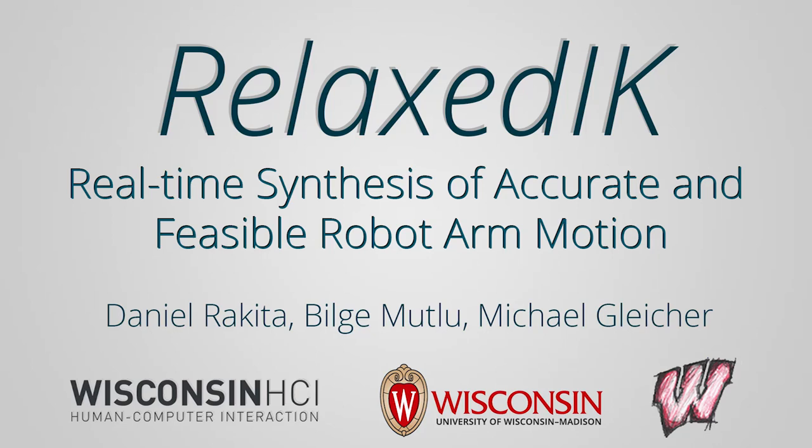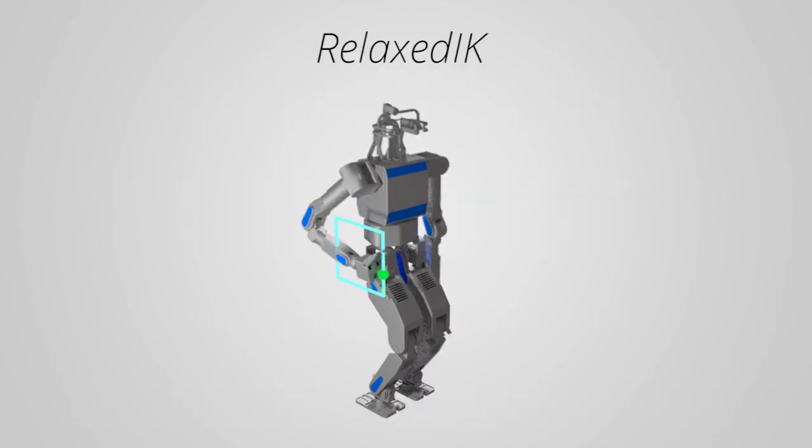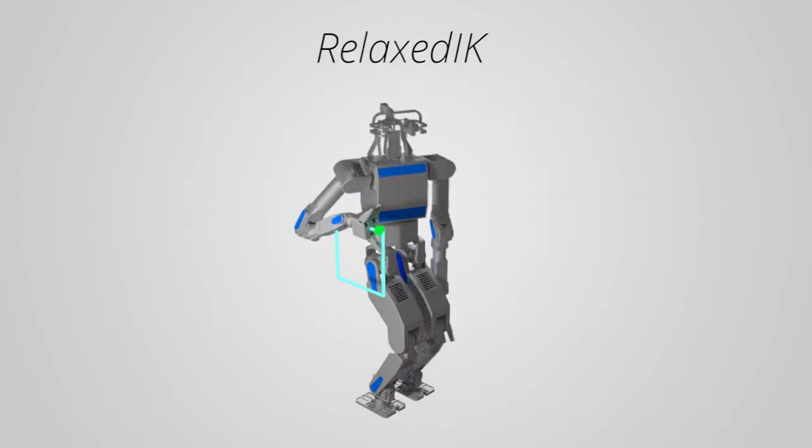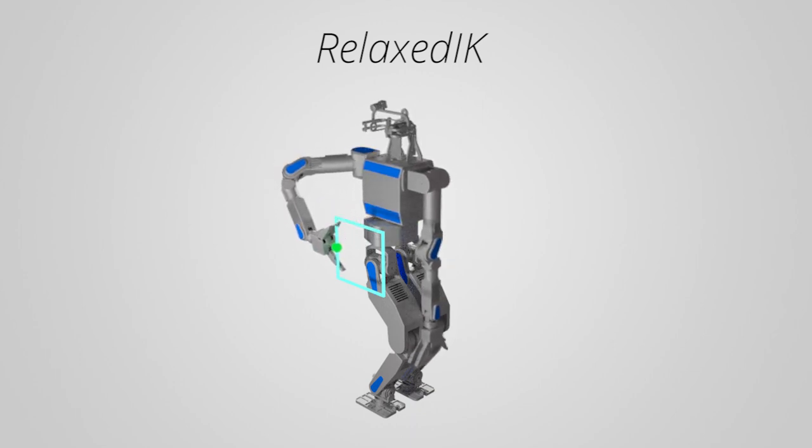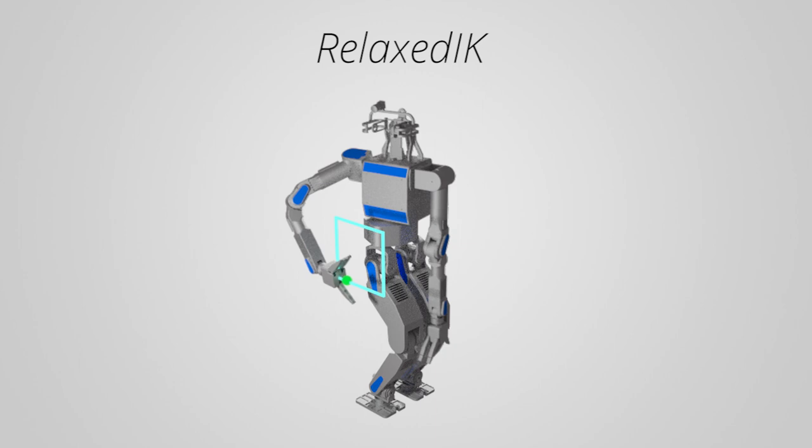In this work, we present a method for generating accurate and feasible robot arm motions in real-time. Our method, called Relaxed IK, matches a series of end-effector pose goals in Cartesian space as best as possible without sacrificing motion feasibility.